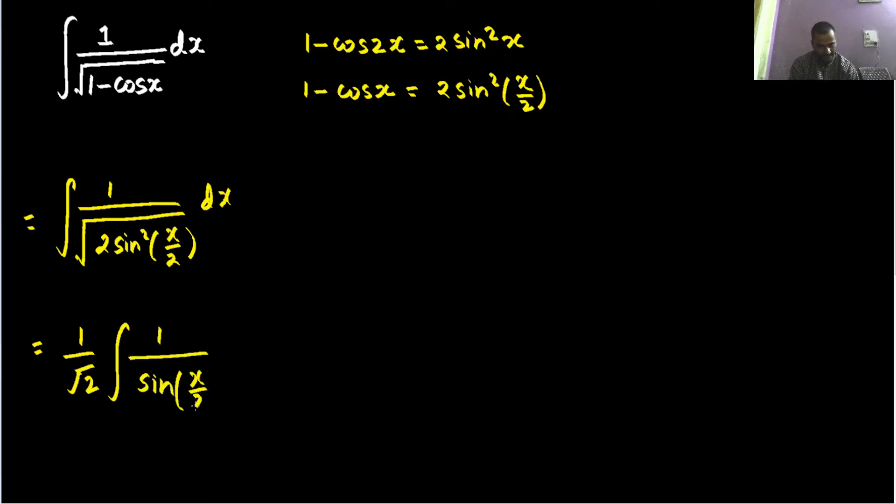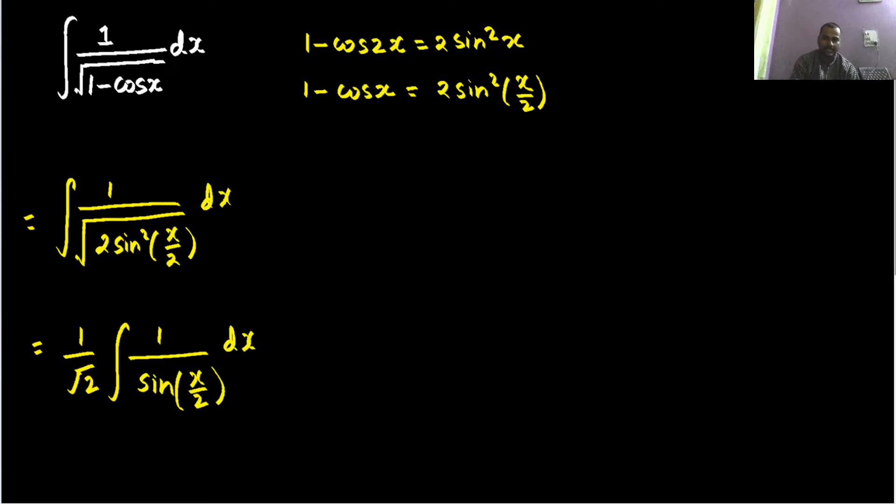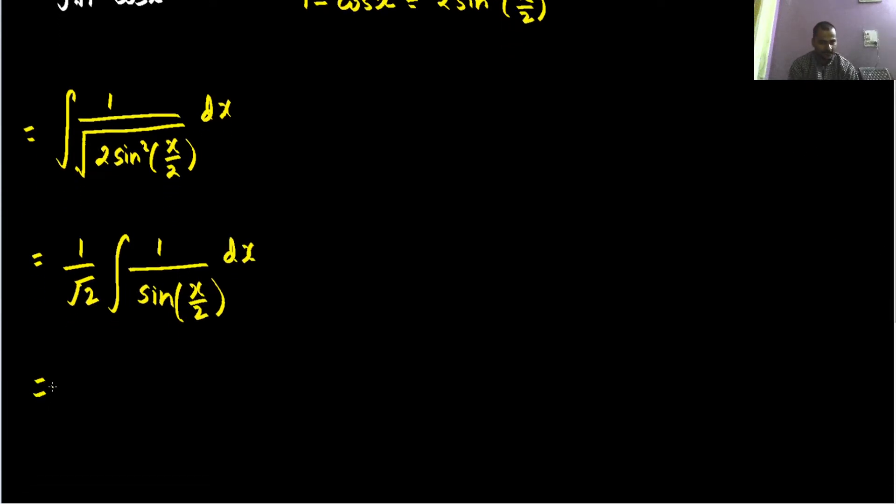So that is nothing but 1 divided by sine x by 2 when it will come outside the root. What is next? 1 by sine is nothing but cosecant, cosecant x by 2.